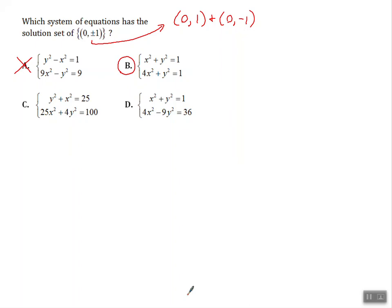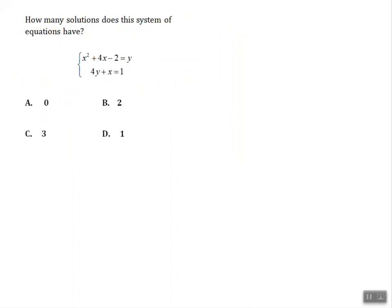Okay, so let's look at our third example. Our third example, it says, how many solutions does this system of equations have? Now, we're not interested in what the solutions are. We're just interested in how many solutions there are. So it gives us the system, and it'll either have 0 solutions, 2 solutions, 3 solutions, or 1 solution.